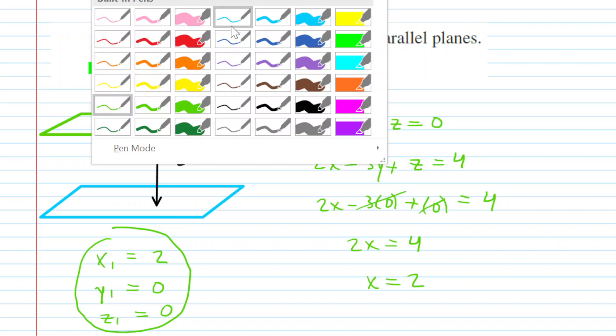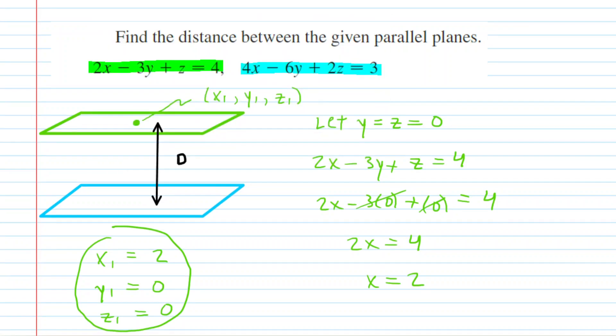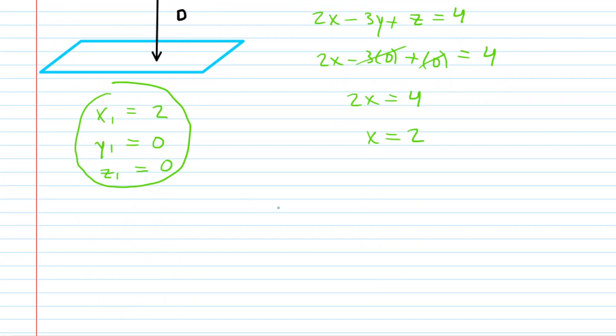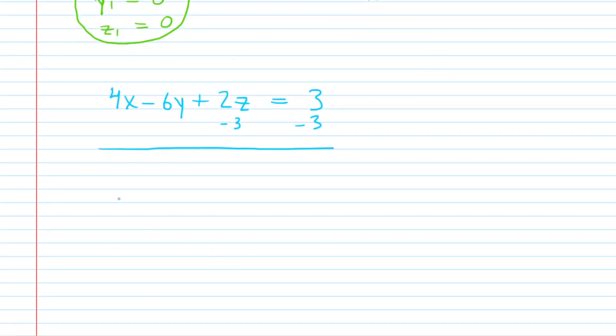But in order for us to use that equation, we have to take the second plane, the blue one, and just rearrange it slightly into a standard form. So, let's rewrite the blue equation. And then to get it into the appropriate form, we just have to set it equal to 0. So, you're just going to want to subtract 3 to the other side of the equation. And now you have 4x minus 6y plus 2z minus 3 is equal to 0.